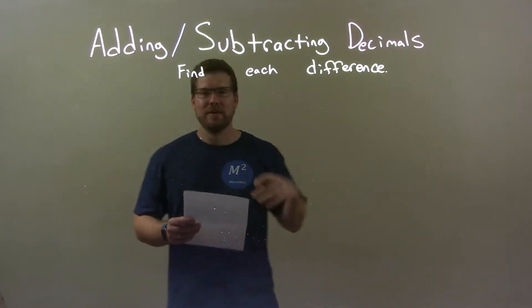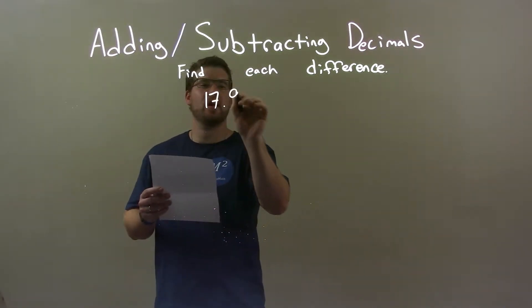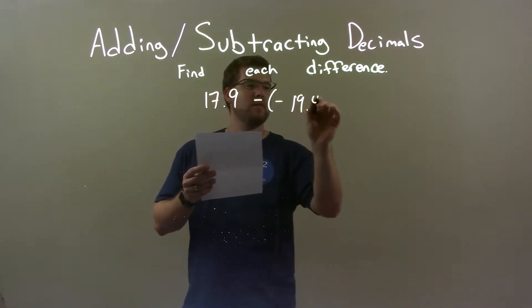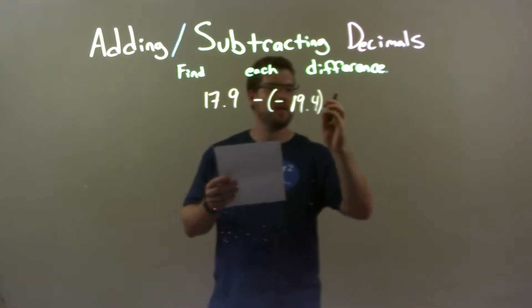If I was given these decimals, 17.9 minus a negative 19.4. Okay, 19.4 right there. Okay, there we go.